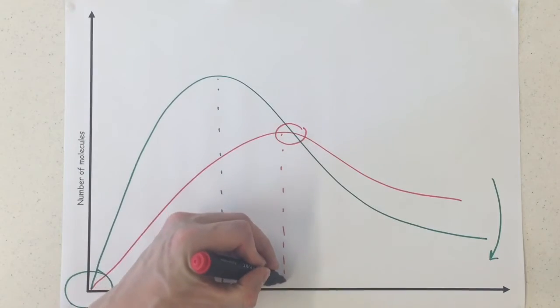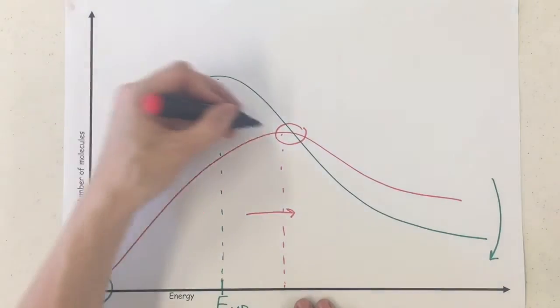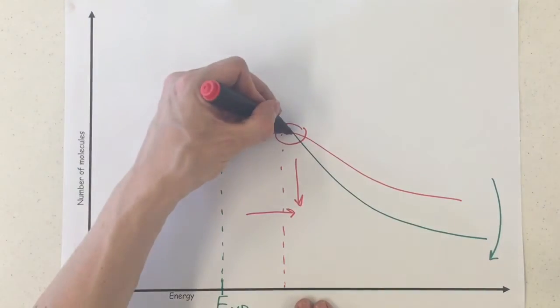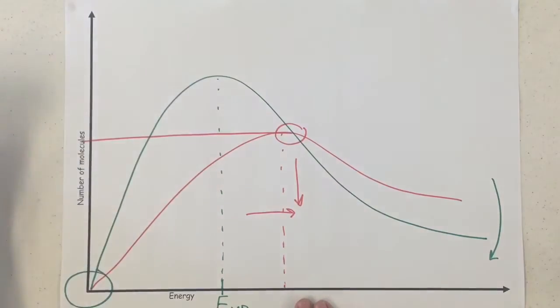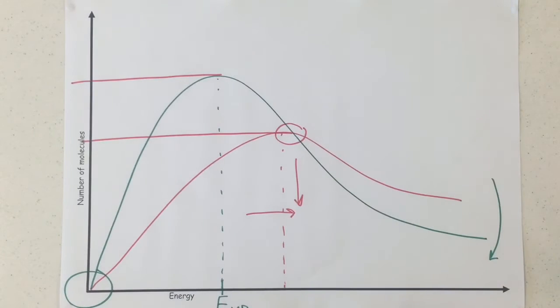The mode is now further to the right, but it is actually lower down in terms of the number of molecules that possess it. We can see it's physically lower down that axis compared to the original line that was there before, but the actual value of the mode energy has gone up.